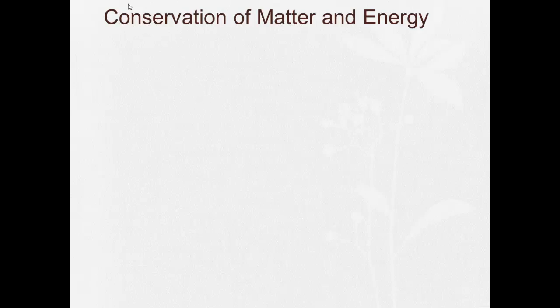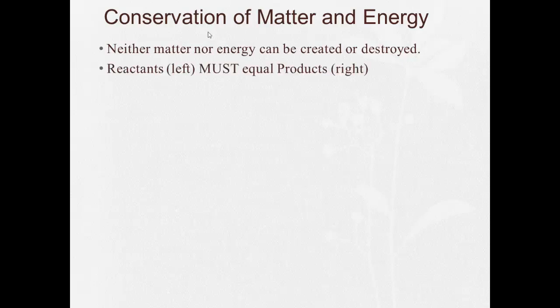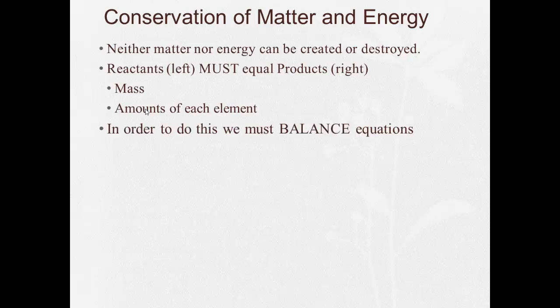And that's because of the law of conservation of matter and energy, which states that neither matter nor energy can be created or destroyed. So basically that means in a chemical reaction, the reactants on the left must equal the products on the right in both mass and the amounts of each element. And in order to do this, we have to balance the equations.